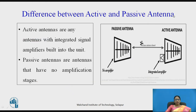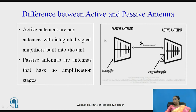What is the difference between active and passive antenna? Active antennas are any antennas with integrated signal amplifiers built into the unit, as you can see here. This integrated amplifier combined with the antenna element forms the active antenna. Passive antennas are antennas that have no amplification stages — no amplifier is present in a passive antenna.